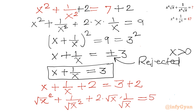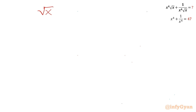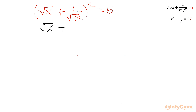This is again a² + b² + 2ab, so I can write (√x + 1/√x)² = 5. Taking square root of both sides gives √x + 1/√x equal to plus or minus √5.